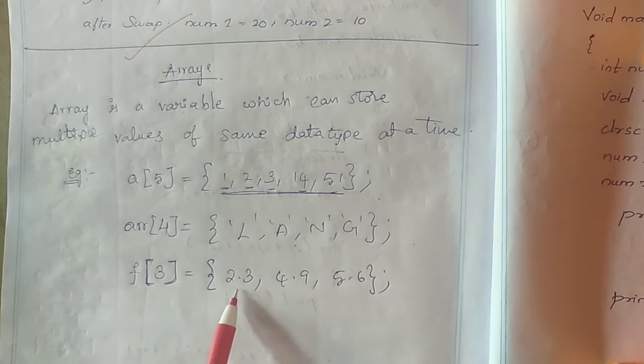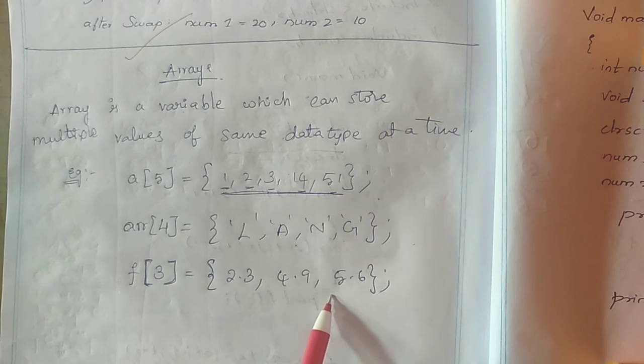F is a floating array having floating data type values. All of you clear?